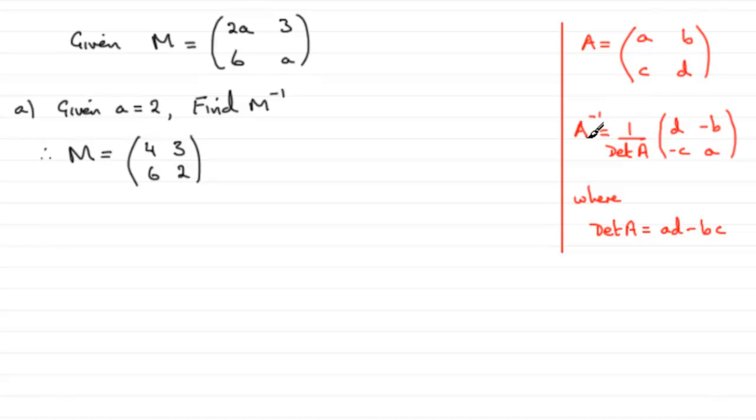the inverse, A with a minus 1 up here, equals 1 divided by the determinant of A, where the determinant of A is AD minus BC.